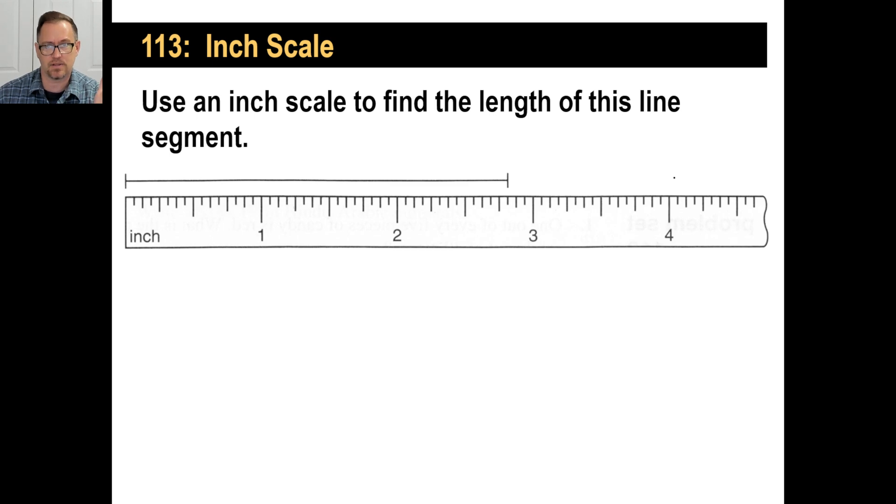All right. Use an inch scale to find the length of this line segment. Okay. Well, we know it's going to be two inches. We can see that it is in there between the fourths and the eighths. So this is going to indicate that it's some kind of a sixteenth. So we can count all the way one, two, three, four, five, six, seven, eight. That's eight sixteenths or one half, right? And then nine, 10, 11, 12, 13, that's going to be two and 13 sixteenths.